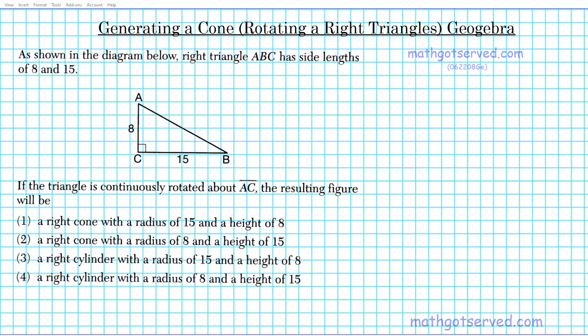Good day students. Welcome to mathgotserved.com. In this clip, we're going to be taking a look at how to generate a cone by rotating right triangles. We're going to be using a nicely created GeoGebra visualization created by Soberrera. The question reads: as shown in the diagram below, right triangle ABC has side lengths 8 and 15.